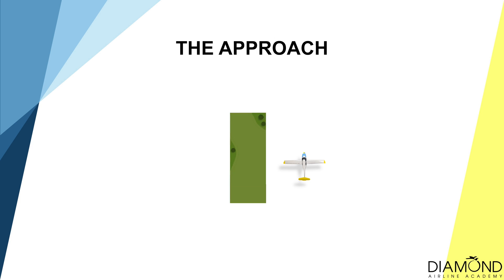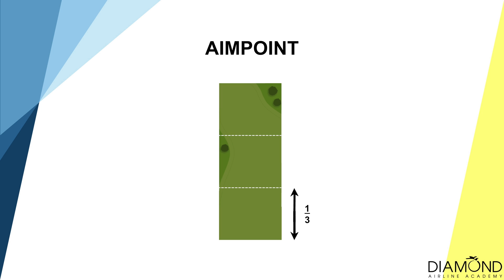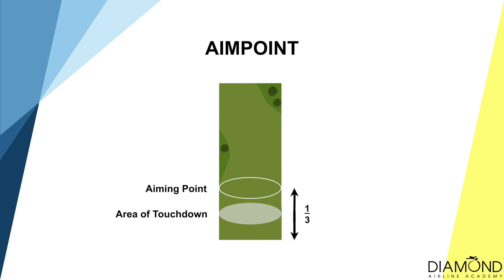Fourth, plan the approach for the selected field so the approach would not be too high or too low. When trying to work out the approach, plan to conduct a circuit over the field if possible, and plan in reverse from the touchdown point back to the current position and altitude. Instead of aiming at the start of the field, aim one third into the field. This is called the one third aim point — in case the aircraft lands short due to unforeseeable headwind, it still has a chance to land within that first third.